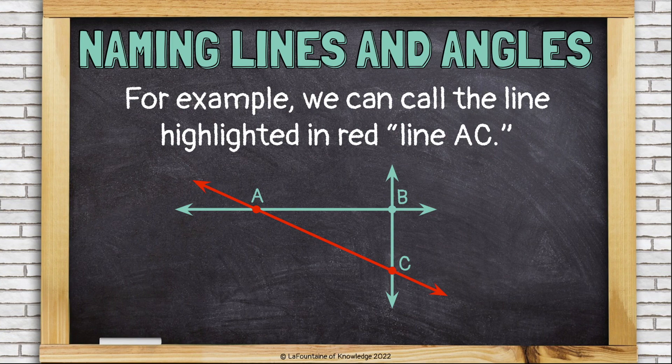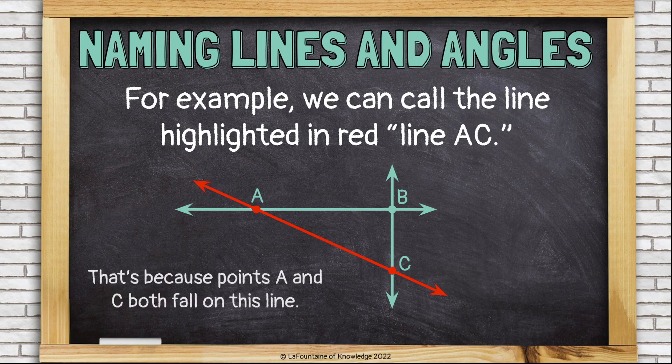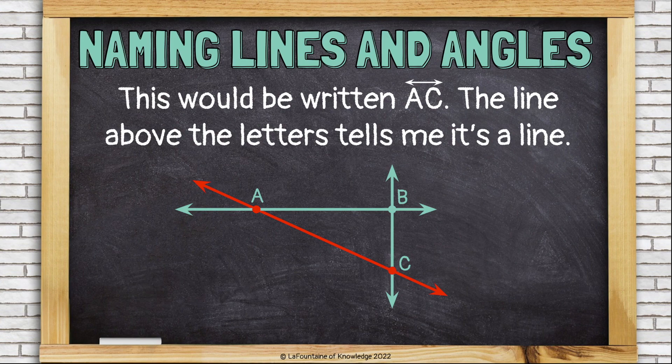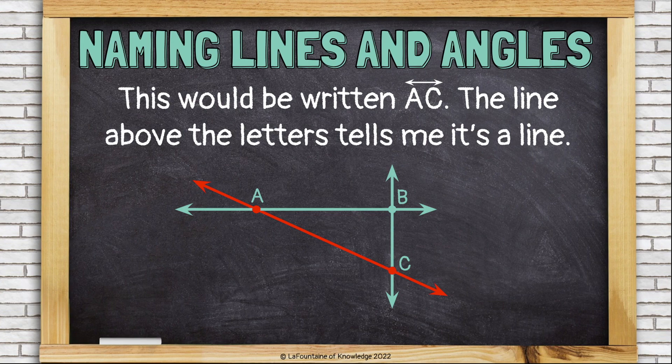For example, we can call the line highlighted in red line AC. That's because points A and C both fall on this line. We could trace from point A to point C like a dot-to-dot. This would be written AC with a line symbol over it. A line symbol just looks like a little line with arrows on both sides to show that lines go in both directions.